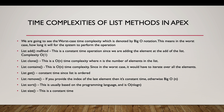The list add() method is a constant time operation — O(1) — since we are adding the element at the end of the list. The clone() method is O(n), where n is the number of elements, because we iterate through all elements to create the new list.